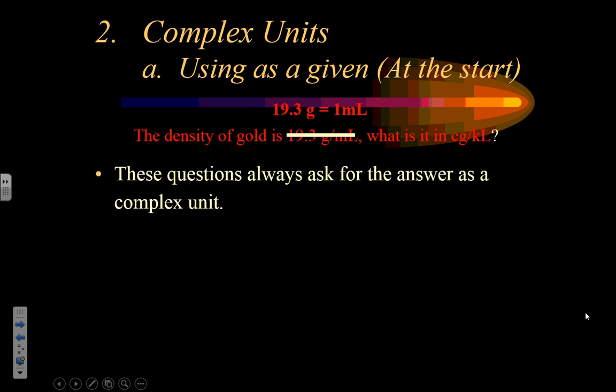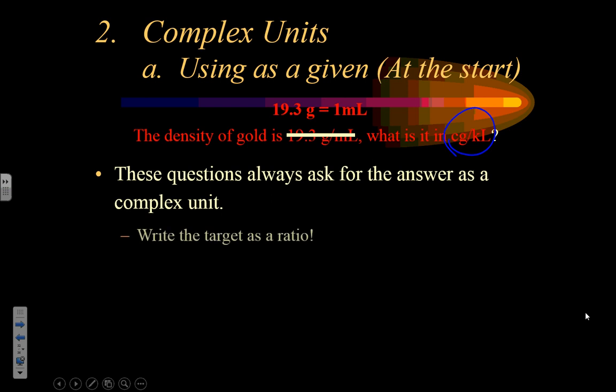These questions are always going to ask for the answer as a complex unit, so as soon as you see that, it's a dead giveaway for the style of problem. First, write the target as a ratio. Our target is centigrams per kiloliter — write it as centigrams over kiloliters — because that makes it clear we need mass on top and volume on the bottom. Centigrams is a type of mass, kiloliters is a type of volume, and that's going to be really important when setting up the problem.